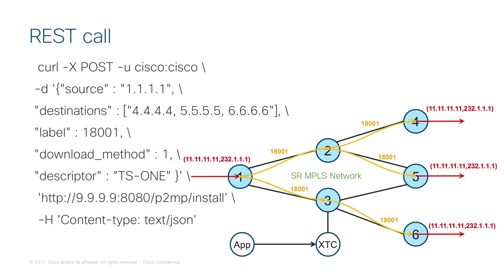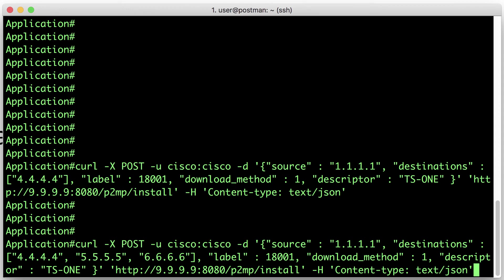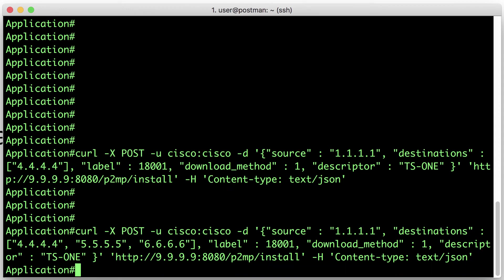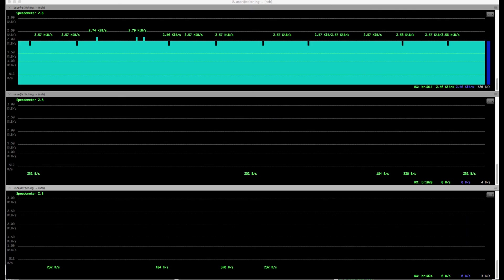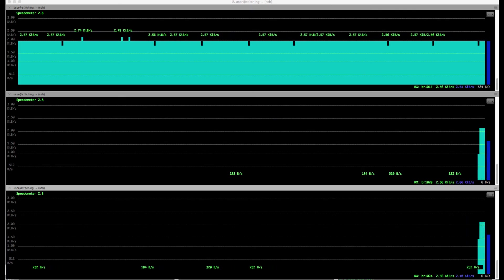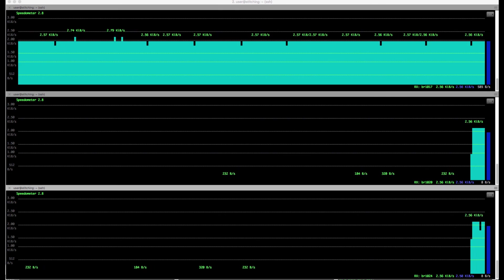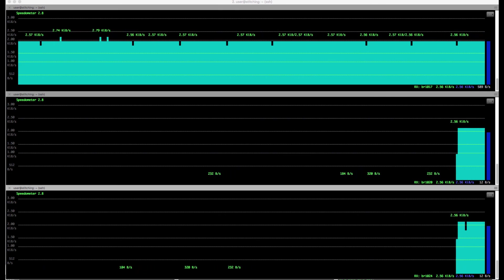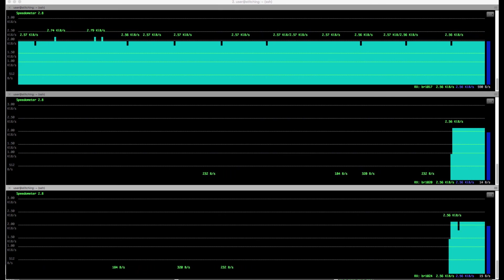So let's try to extend this multicast stream to routers 5 and 6. This is very simple — we just extend the set of destinations in the RESTful API call like this, and the controller will build an efficient multicast forwarding tree through the network. We just use the application to send a new API call, and here we can see how traffic is being forwarded to all interested parties.